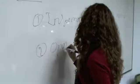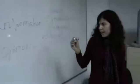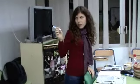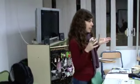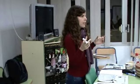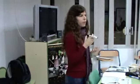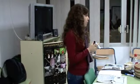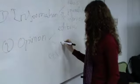Then we have the opinion group — the second group. Here we have the editorials. They are the opinion of the newspaper. As it is the opinion of the newspaper, they are not signed. They only have the title, the headline, and the body of the text. They are usually about topics of general interest — something important for the population, for the readers.